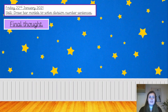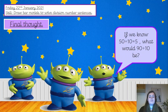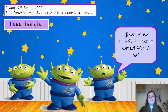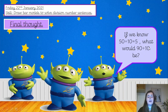Your final thought for today: if we know that 50 divided by 10 equals 5, what would 90 divided by 10 be? Pause the video and have a go. We know that 50 is made up of 5 tens and 0 ones, and 90 is made up of 9 tens and 0 ones. If you divide 50 by 10 you lose the 0 because you've divided into 10 groups, ending up with just 5 ones. So if you divide 90 by 10 the same way, you end up with just 9 ones — your answer will be 9. Well done if you got that. I hope you all have a lovely weekend, take care, stay safe, and I will see you soon. Bye.